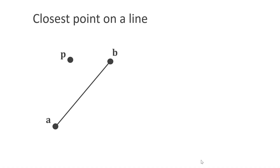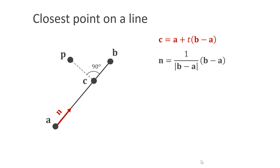Before we can start to code, we have to look at the math first. There is an important vector operation we need for our project: finding the point on the line AB which is closest to a point P. The closest point C is the projection of P onto the line AB. Since it lies on the line AB, we can express it with a regular number T. If T is zero, we are at point A; if it is one, we are at B. For values in between, we are somewhere on the line. All we need is to find T.